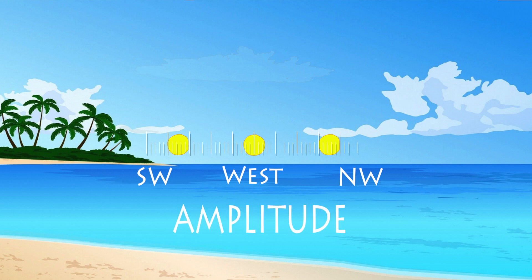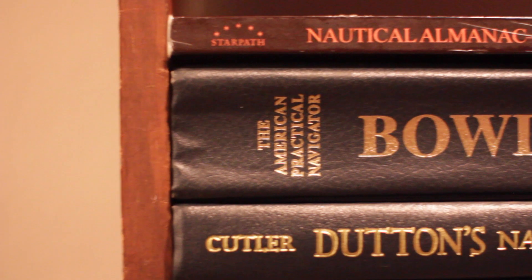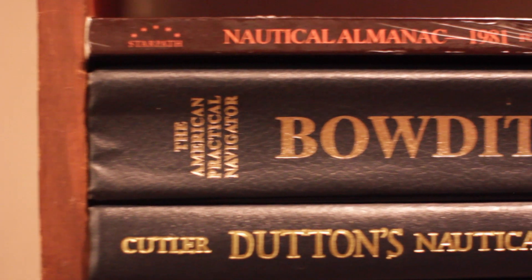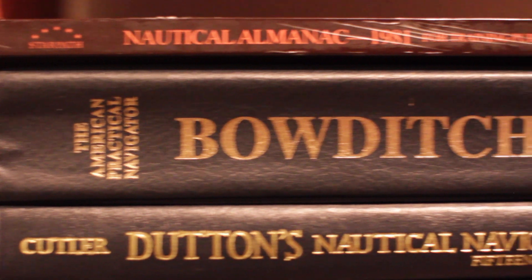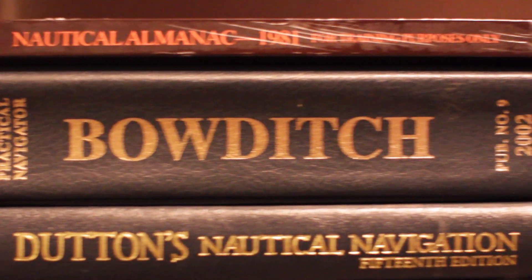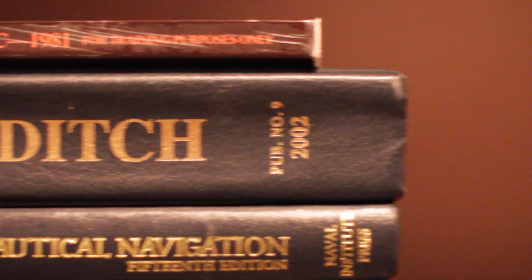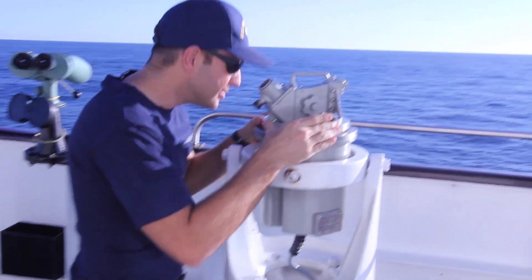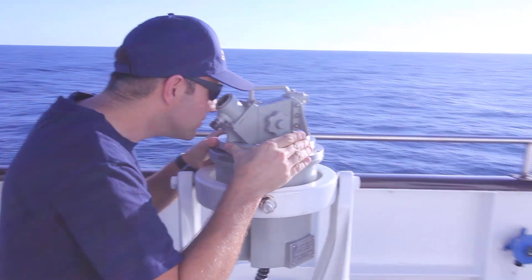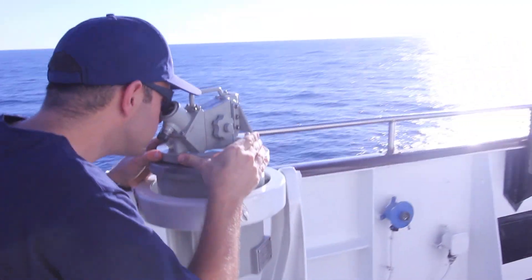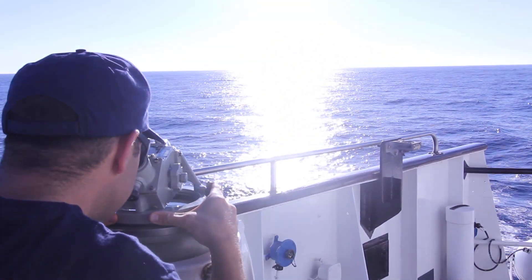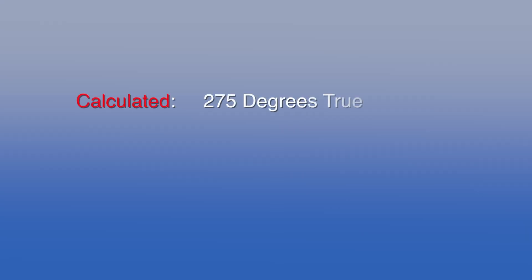Using Bowditch and the nautical almanac you can calculate the amplitude for your position — in other words, you can calculate the exact bearing to sunset or sunrise. Then all you have to do is measure it with a gyro compass and you can determine gyro error.